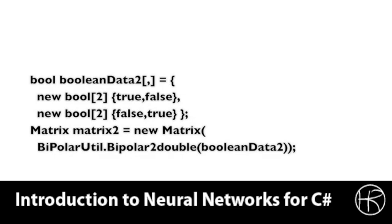The bipolar utility provides a method called BipolarToDouble. This takes the true and false values and converts them into the corresponding negative 1s and 1s of bipolar notation. You can use this bipolar utility right in the constructor call to the matrix class. This will create a valid double-based array that can be passed into the matrix to initialize it to these values.